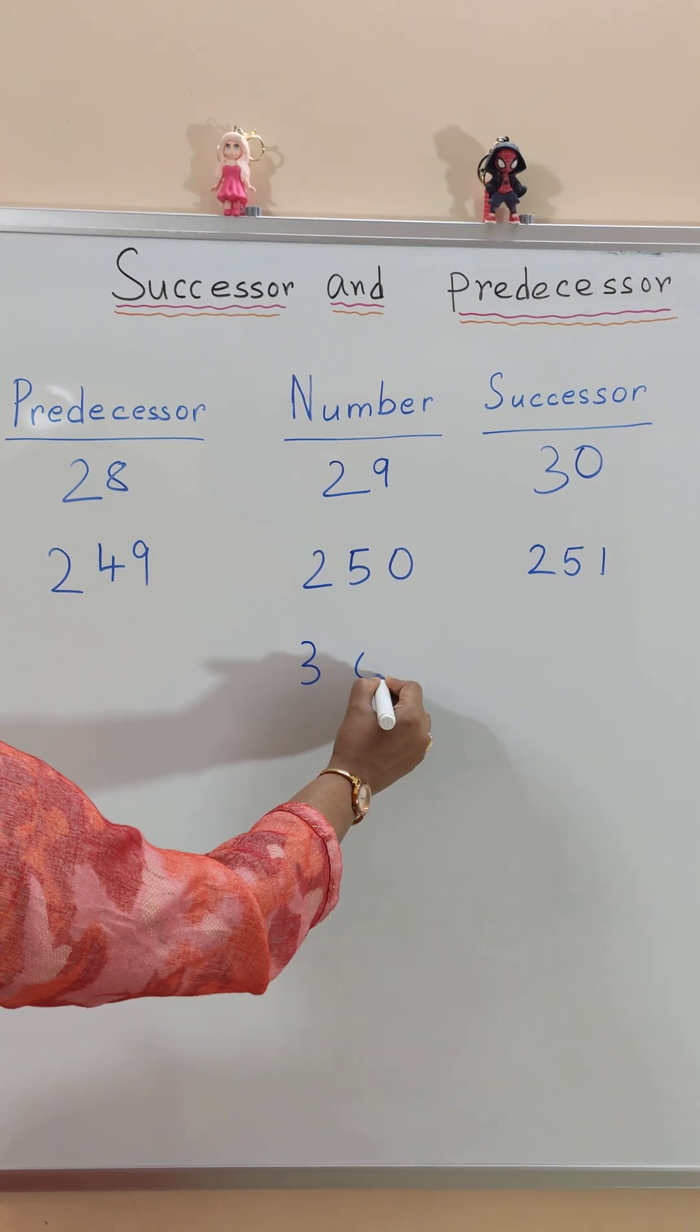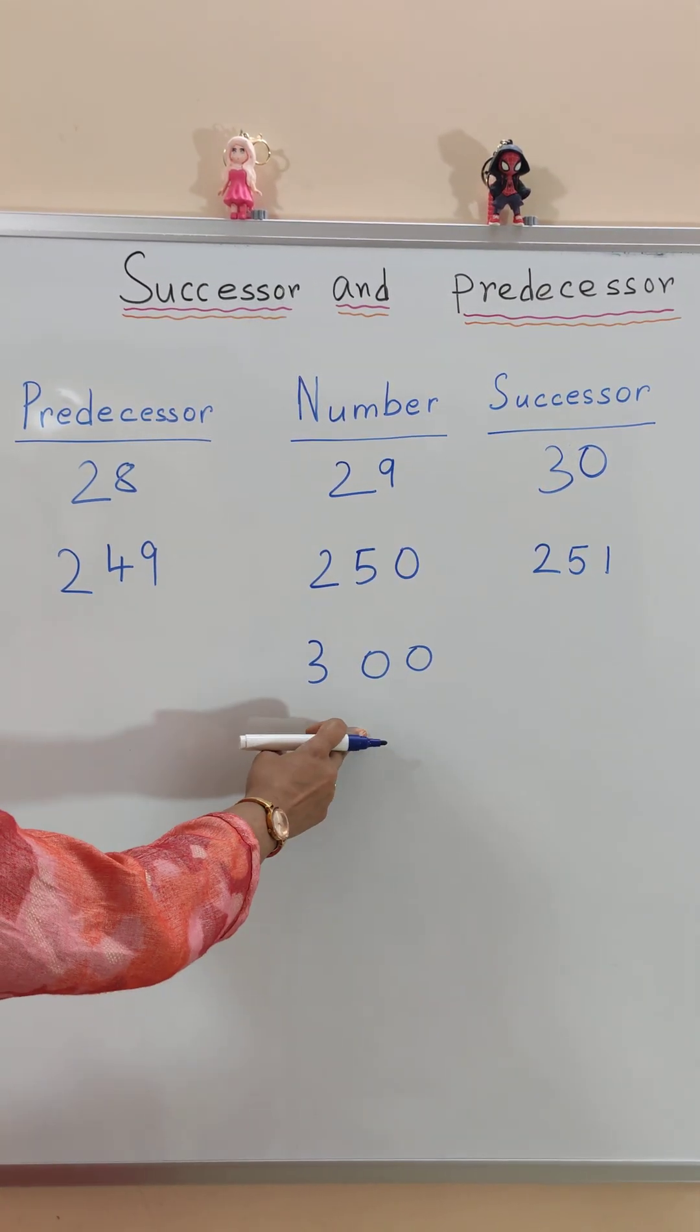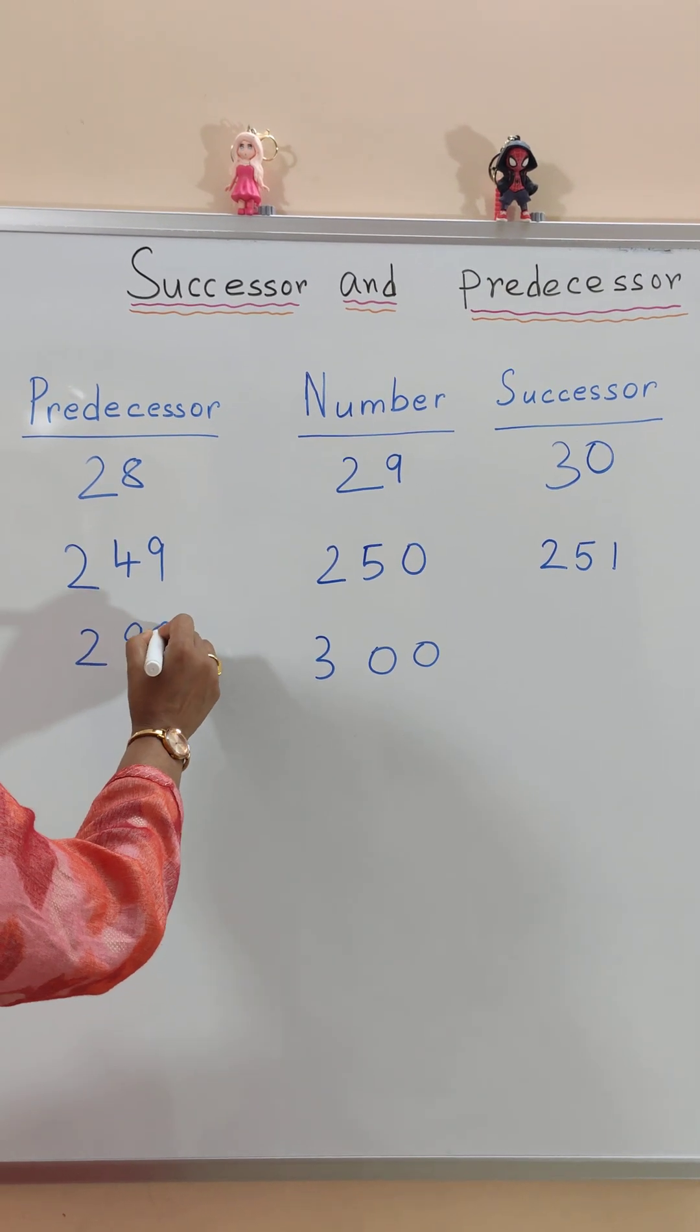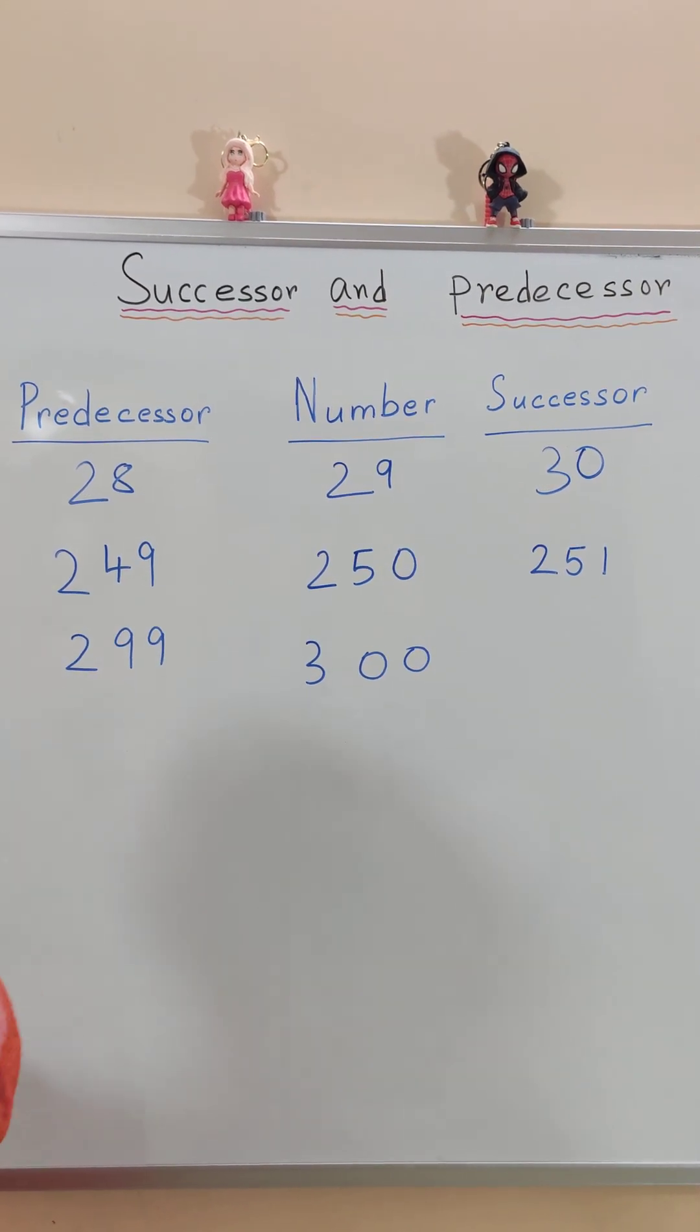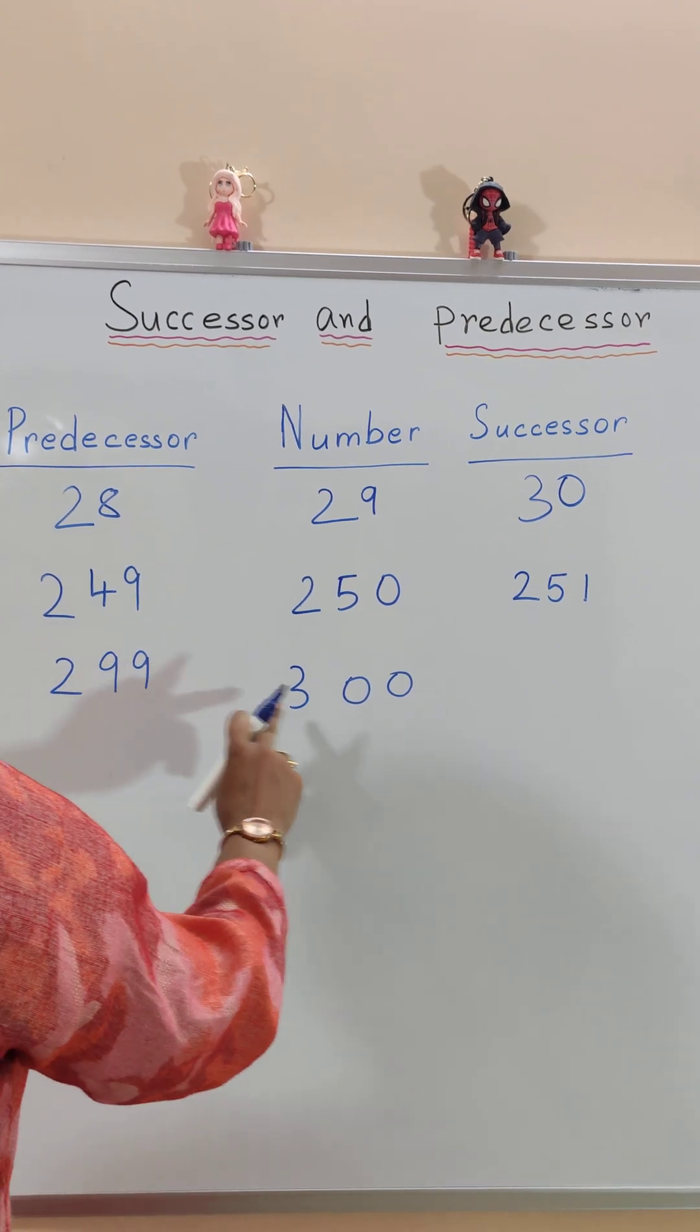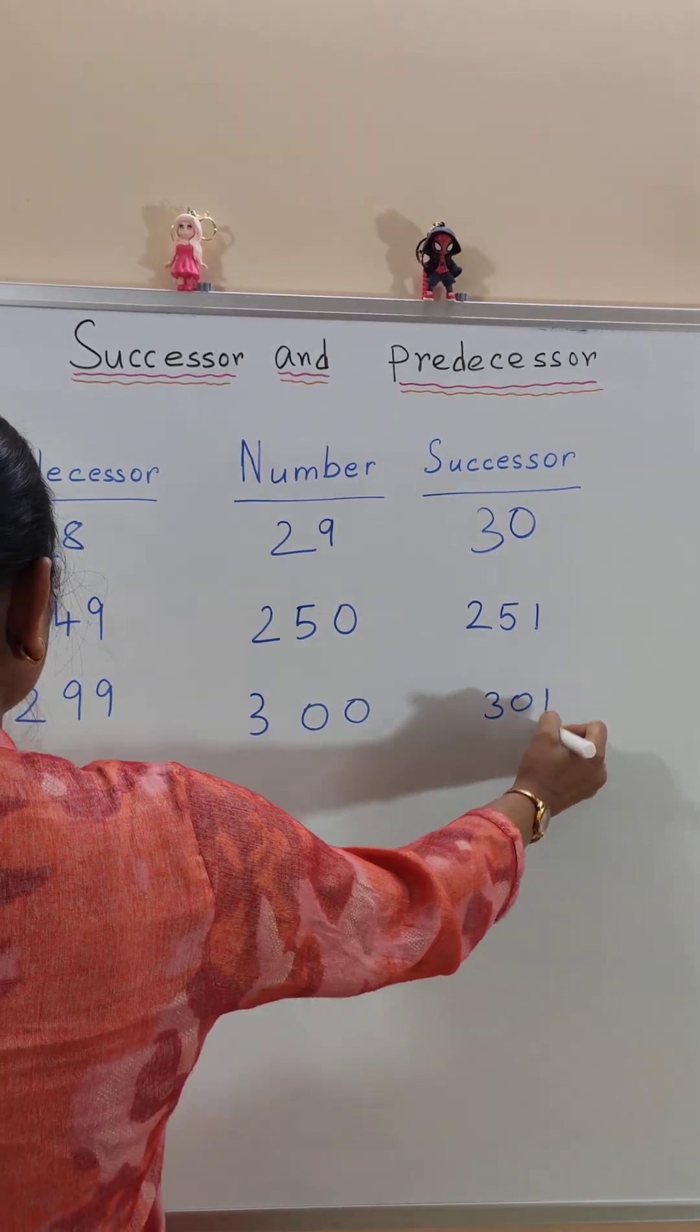Now let me give you another example. Suppose the number given is 300. The predecessor of the given number 300 is 299, that is the number just before the given number. Just before means 299. And the after number, that is the successor, is 301.